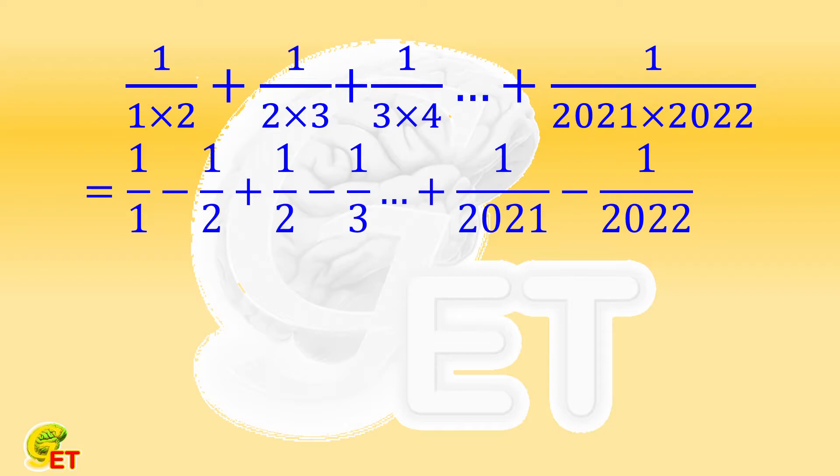such a summation equals to 1 over 1 minus 1 over 2, plus 1 over 2 minus 1 over 3, until 1 over 2021 minus 1 over 2022.